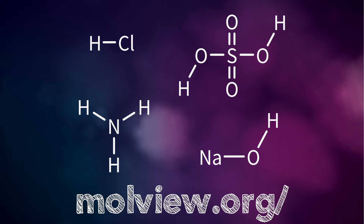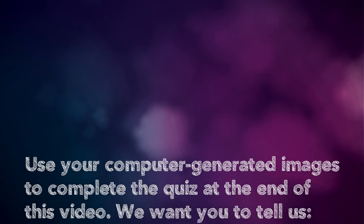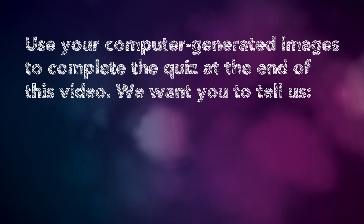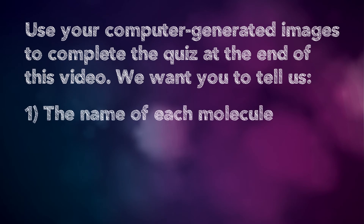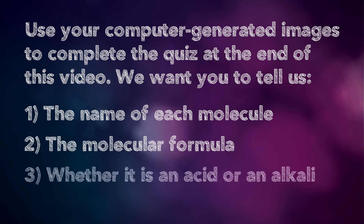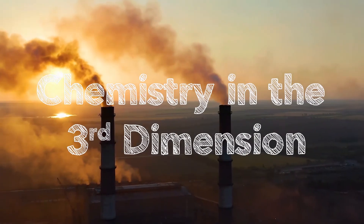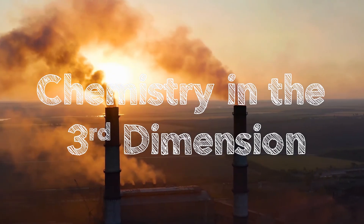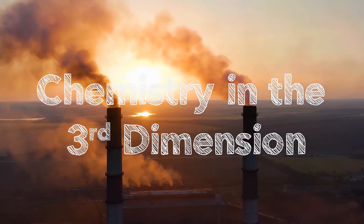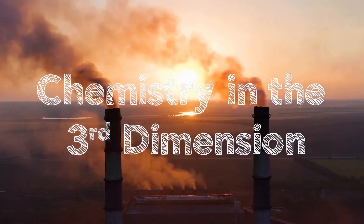That's it from us for now. But before we go, we'd like to set you a challenge. On the screen there are diagrams of four different molecules. We want you to follow the link to a website called MolView, where you can draw these using the molecular modelling software. Then, use your computer-generated images to complete the quiz at the end of this video. We want you to tell us the name of each molecule, the molecular formula, and whether it is an acid or an alkali. In our next video on acids and alkalis, we'll be talking about the effects that acids and alkalis have on the environment, and what we can do to stop it. But until then, thank you for listening, take care, and stay safe.